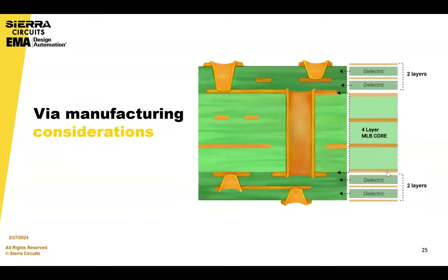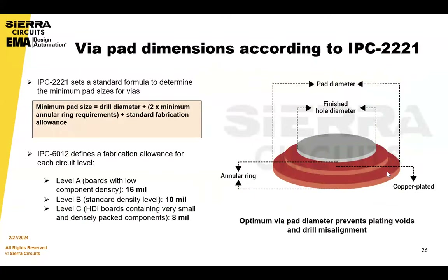Other VIA manufacturing considerations: according to IPC 2221, you need to ensure sufficient pad dimension for reliable electrical connectivity, and therefore a minimum pad size. The pad size should be calculated by the drill size plus two times the annular ring requirement. Here are some examples based on density levels — for a less dense board versus a dense board, your annular ring will definitely go down.